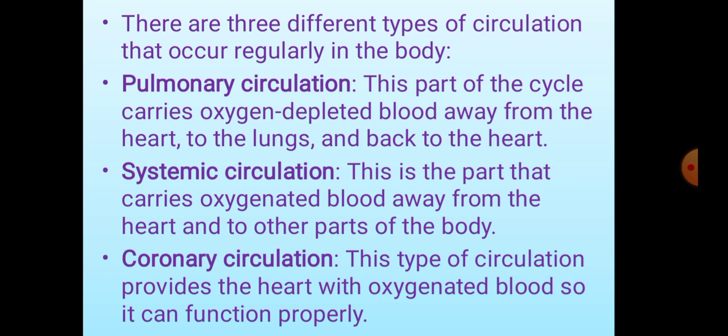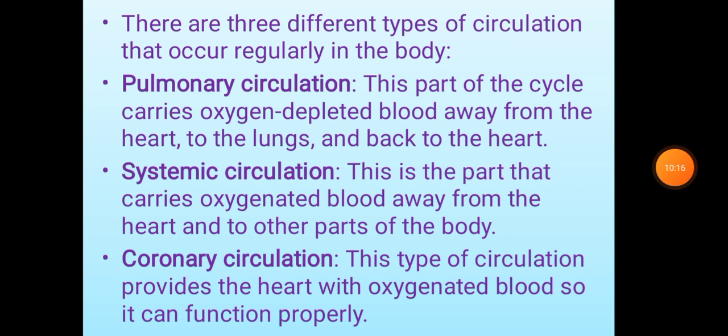There are three different types of circulation in the body. First, pulmonary circulation carries oxygen-depleted blood away from the heart to the lungs and back to the heart. Second, systemic circulation carries oxygenated blood away from the heart to other parts of the body. Third, coronary circulation provides the heart itself with oxygenated blood so it can function properly.